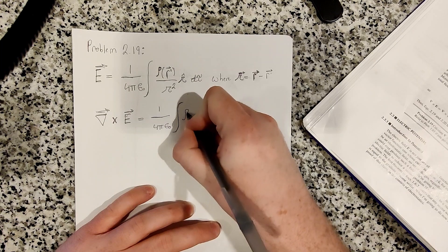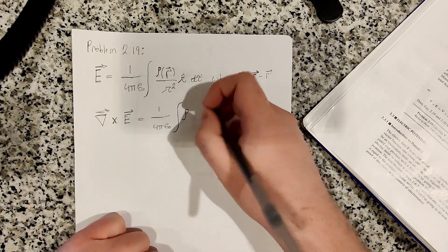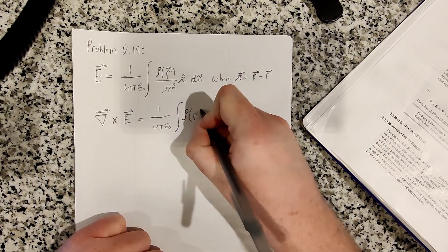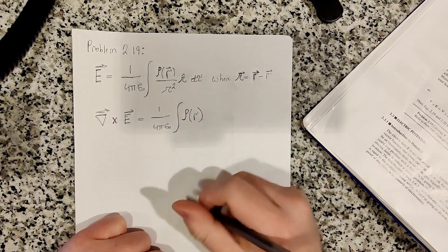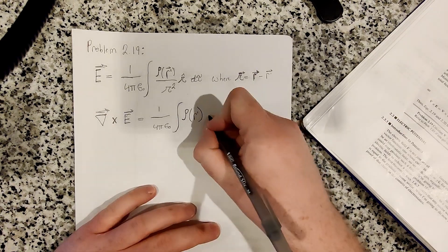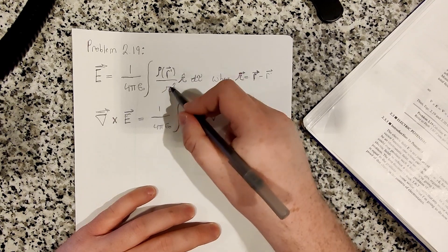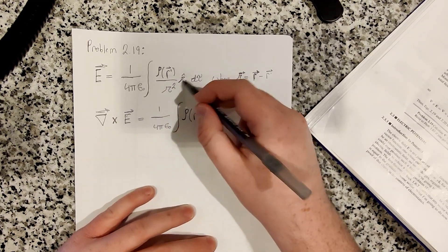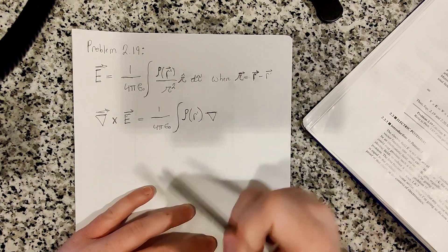And we can ignore, since the curl is a function of r and not of r prime, the curl does not apply to the charge density. But the curl applies to the script r, the 1 over script r squared, and the script r hat, because those are functions of r, since script r is r minus r prime.